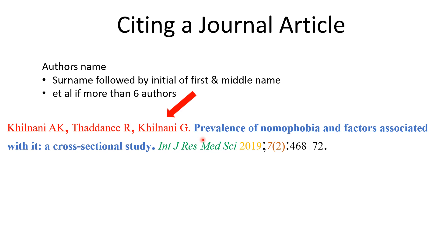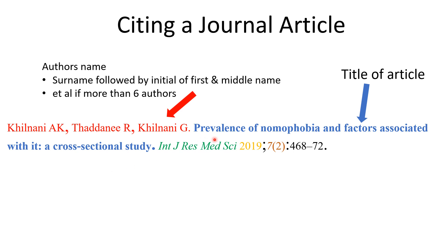The second component of the reference is the title of the article. In this particular example, the title is 'Prevalence of Nomophobia and Factors Associated with It: A Cross-Sectional Study.' Whatever title is mentioned in the article, it should be written exactly as it is in the reference.